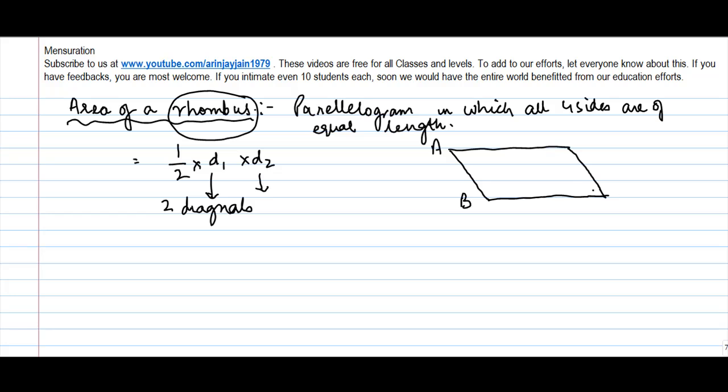Let's say you have a rhombus ABCD. Now, let's say the center point is O. In a rhombus, the perpendiculars bisect each other, which means that OA is equal to OC and OB is equal to OD.